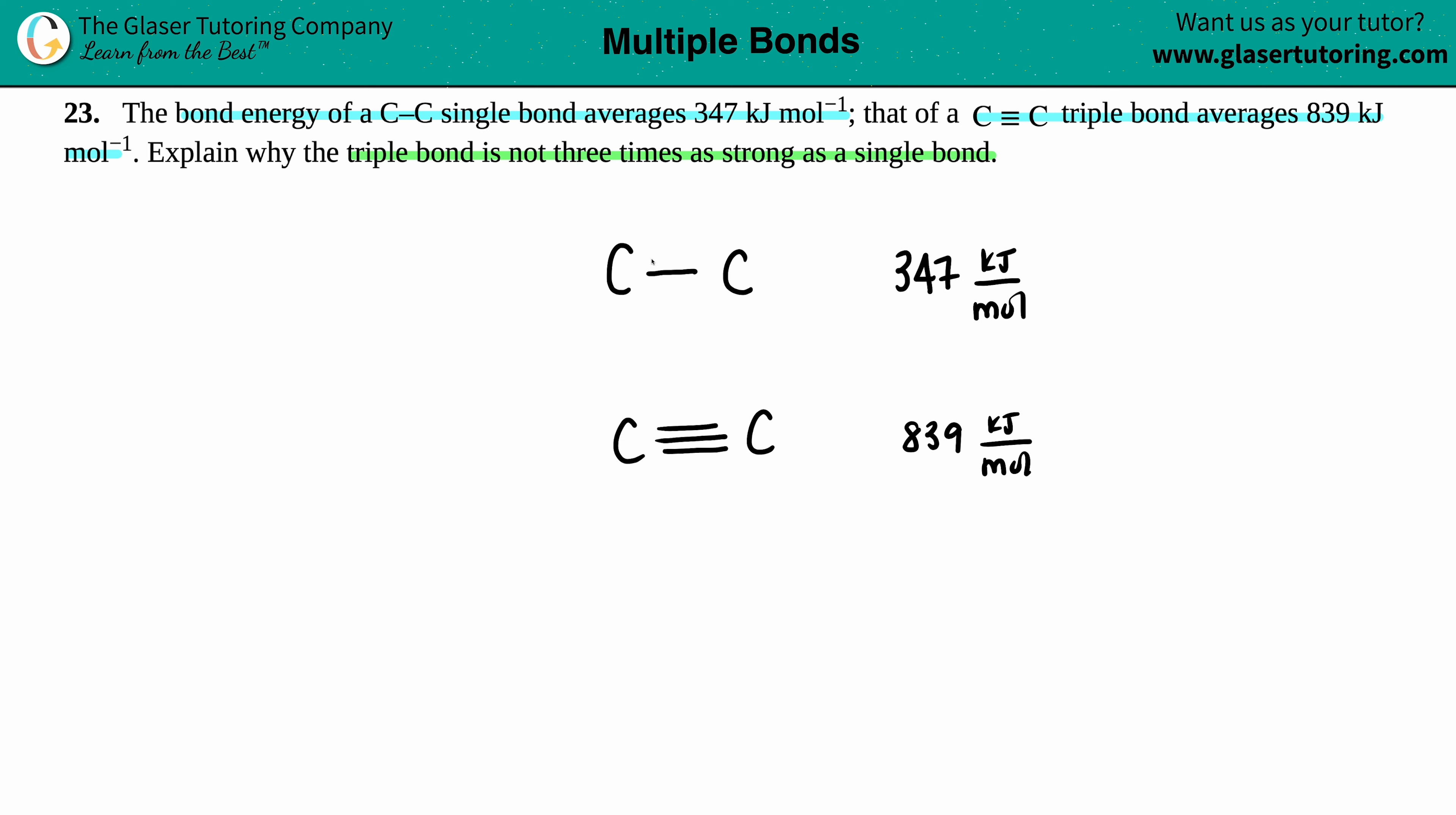Well, the question comes from, or the answer comes from, what types of bonds are a single and a triple bond? So a single bond is always one sigma bond, right? And that's the denotion for a sigma bond.